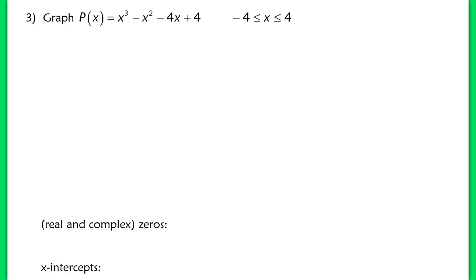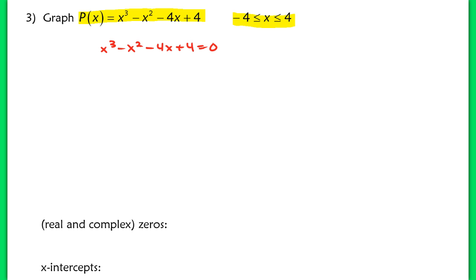Everything we've talked about leads us to question 3, where we're going to graph a higher degree polynomial. We have the polynomial x cubed minus x squared minus 4x plus 4, and we're asked to graph it within the specific domain from negative 4 to 4. In order to graph this function, I need to know where the x-intercepts are. To find the x-intercepts, I'll have to find the zeros of the function, so I'm solving x cubed minus x squared minus 4x plus 4 equals 0.